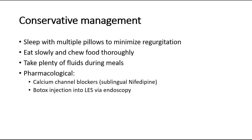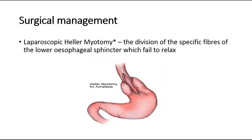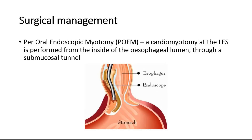Another option is Botox injection into the LES via endoscopy. For surgical management, there is the laparoscopic Heller myotomy, which involves the division of the specific fibers of the lower esophageal sphincter which fail to relax. Second is peroral endoscopic myotomy, where a cardiomyotomy at the LES is performed from the inside of the esophageal lumen through a submucosal tunnel.